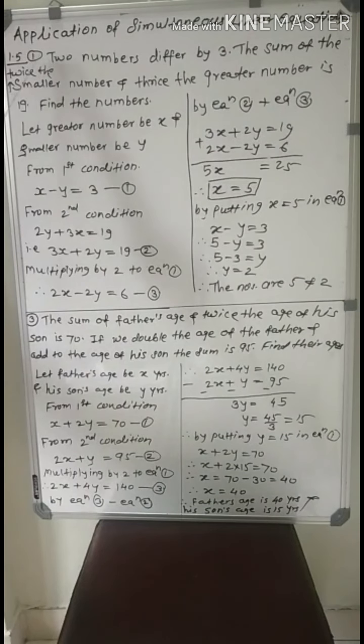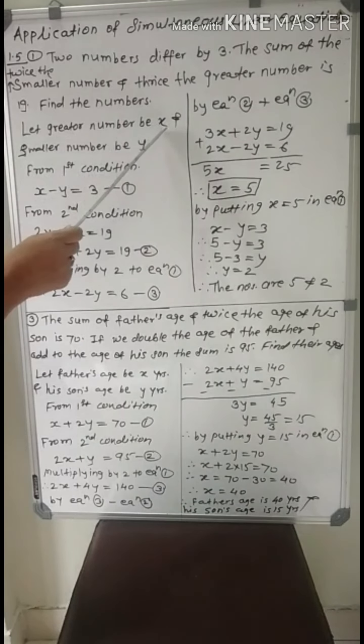So first example is: two numbers differ by 3. The sum of twice the smaller number and thrice the greater number is 19. Find the numbers. First, read the example carefully and decide what is asked.